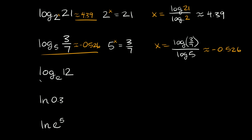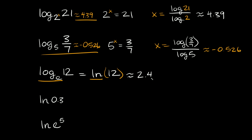Now let's look at a different one. Here we have log base e of 12. We have our special number e, so this is called a natural log. Whenever you have e as the base, this is the same thing as taking the natural log of 12. Log base e and natural log mean the same thing, and there are two different buttons on your calculator — one for logs and one for natural logs. Hit the natural log button and type in 12. You'll get that this is approximately equal to 2.48. So e raised to approximately 2.48 is equal to 12.